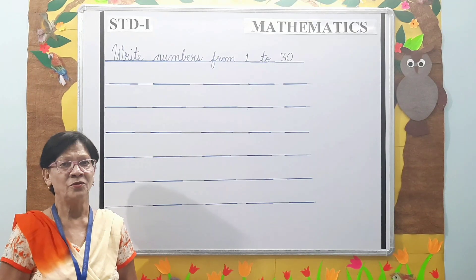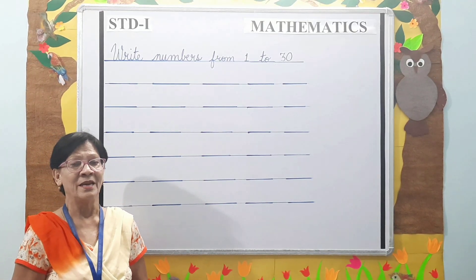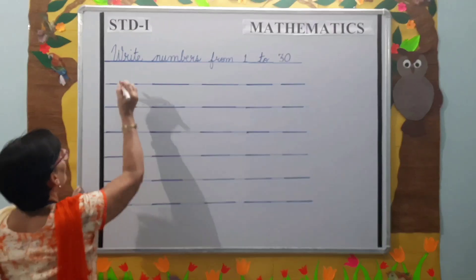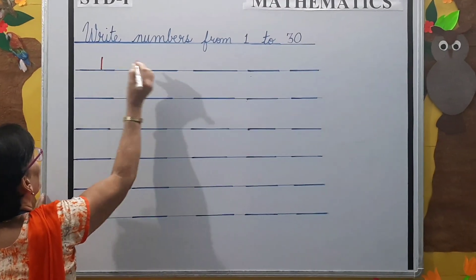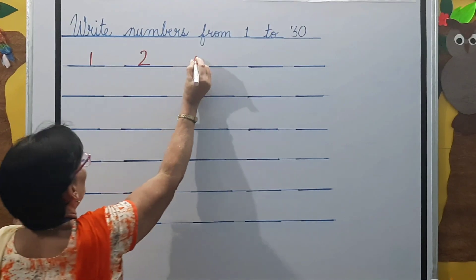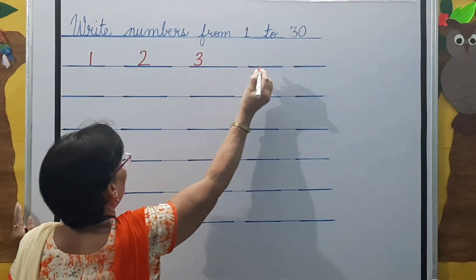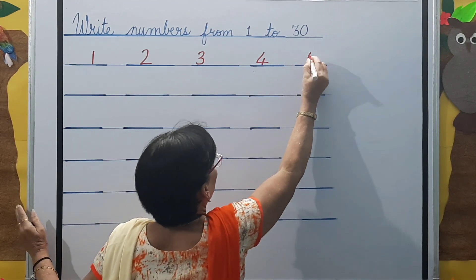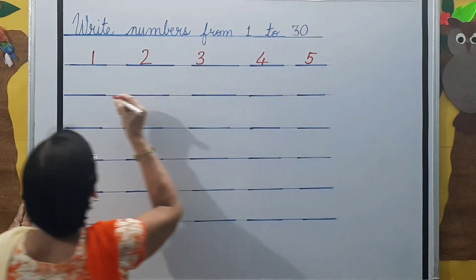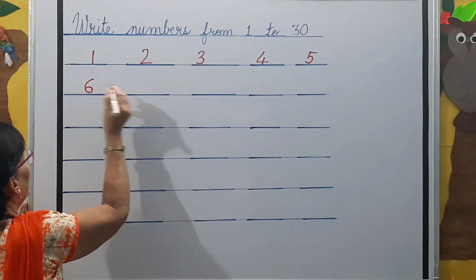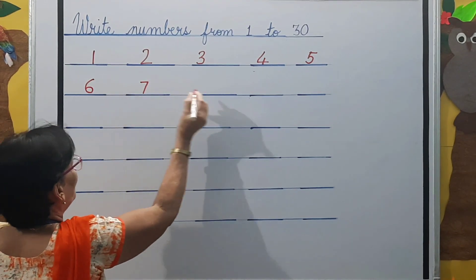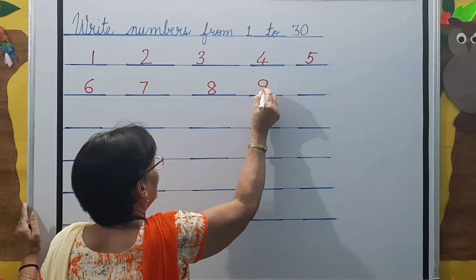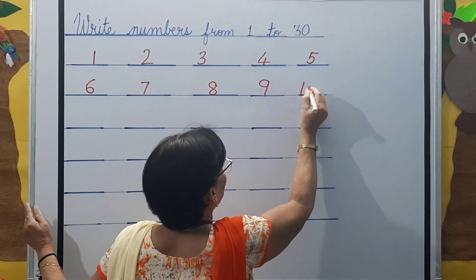Now students, let's write the numbers from 1 to 30. 1, 2, 3, 4, 5, 6, 7, 8, 9, 10.